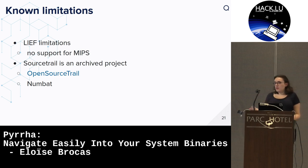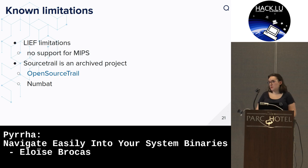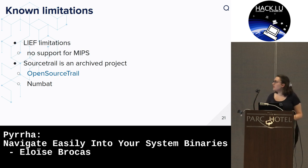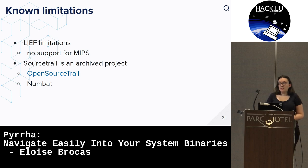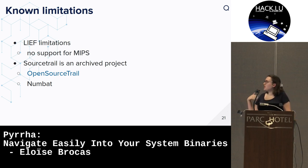We have some limitations. We rely only on LIEF, so we have all the LIEF limitations. For the moment, there is no support in the last released version of LIEF for MIPS architecture, because there is an issue listing all exported symbols. We have submitted a patch that will partially solve the problem - it has been merged into LIEF but not yet released. SourceTrail is also an archived project, but for the moment it works. There is a fork called Open SourceTrail which just changed the CMake, and you can use that fork if the archived project doesn't work for you.